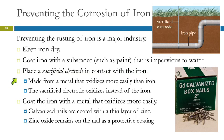Another way is to place a sacrificial electrode in contact with the iron. That doesn't necessarily work on your car, but it works well on iron pipes. This is made out of a metal that is oxidized more easily than the iron, so instead of the iron being oxidized, this metal will be oxidized. Your iron pipe will be safe until your sacrificial electrode is gone — then you're in trouble again.